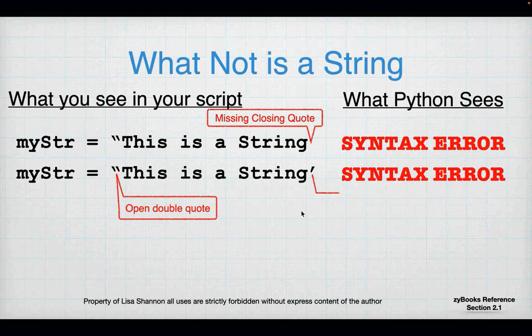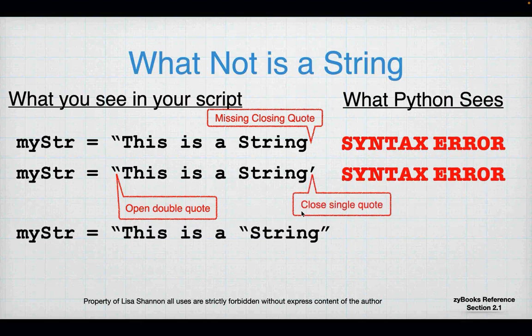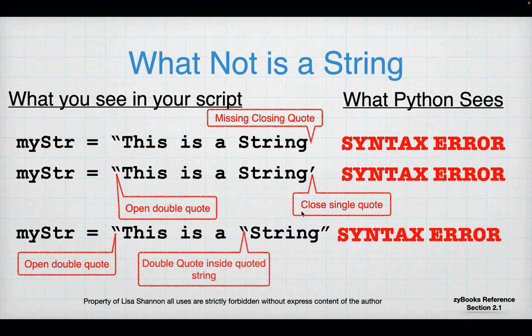Opening with a double quote and closing with a single quote is a syntax error. Also a syntax error: opening with a double quote, having another double quote in the middle, then a closing double quote — Python will read up to the middle quote as the string and not know what comes after. If you want a quote inside a string of the same type, you have to escape it with a backslash so Python knows not to read that quote as the string delimiter.